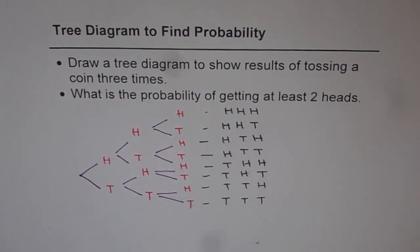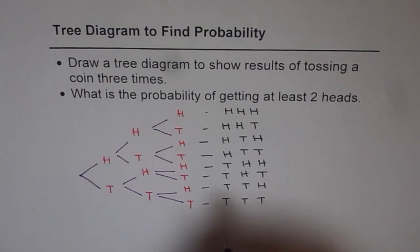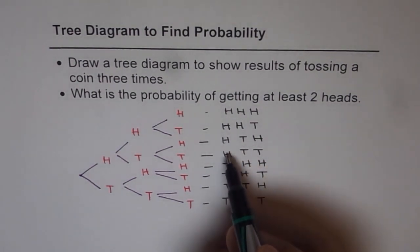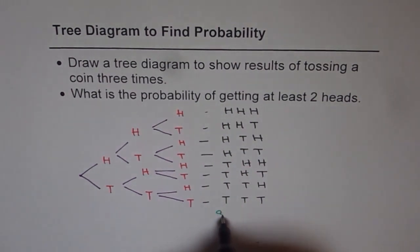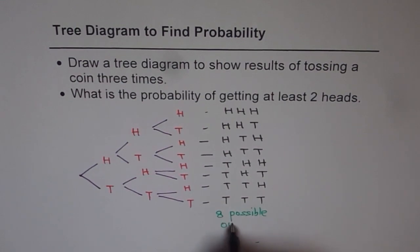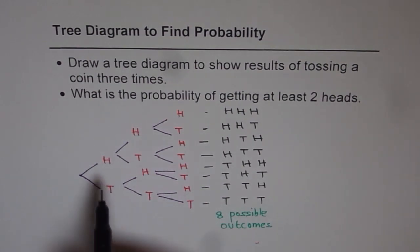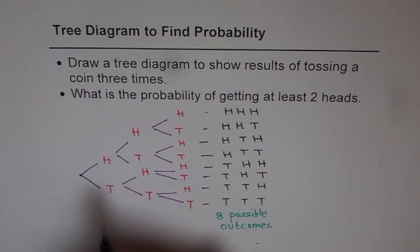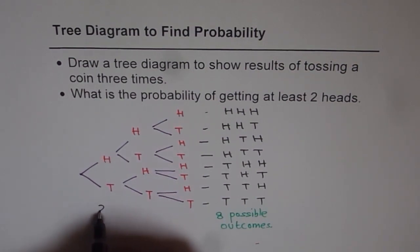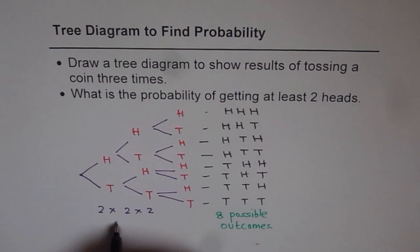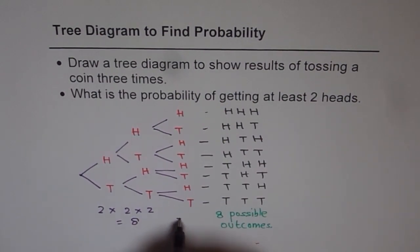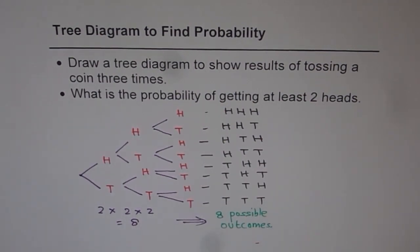So these are all the possible outcomes. How many are there? 1, 2, 3, 4, 5, 6, 7, 8 — we have 8 possible outcomes. That was expected. Since we are doing it three times and every time we have a choice of 2, it could be either head or tail. So the number of outcomes was 2 × 2 × 2 = 8.